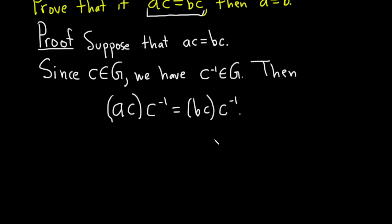And now we can invoke associativity. So we can rearrange the parentheses. So this is a, c, c inverse equals b, c, c inverse, by associativity.